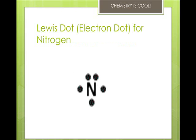For example, nitrogen has five valence electrons. So first we write the symbol N, and then you add one electron to each side. So we go one, two, three, four, all the way around, and then you pair up the last one.